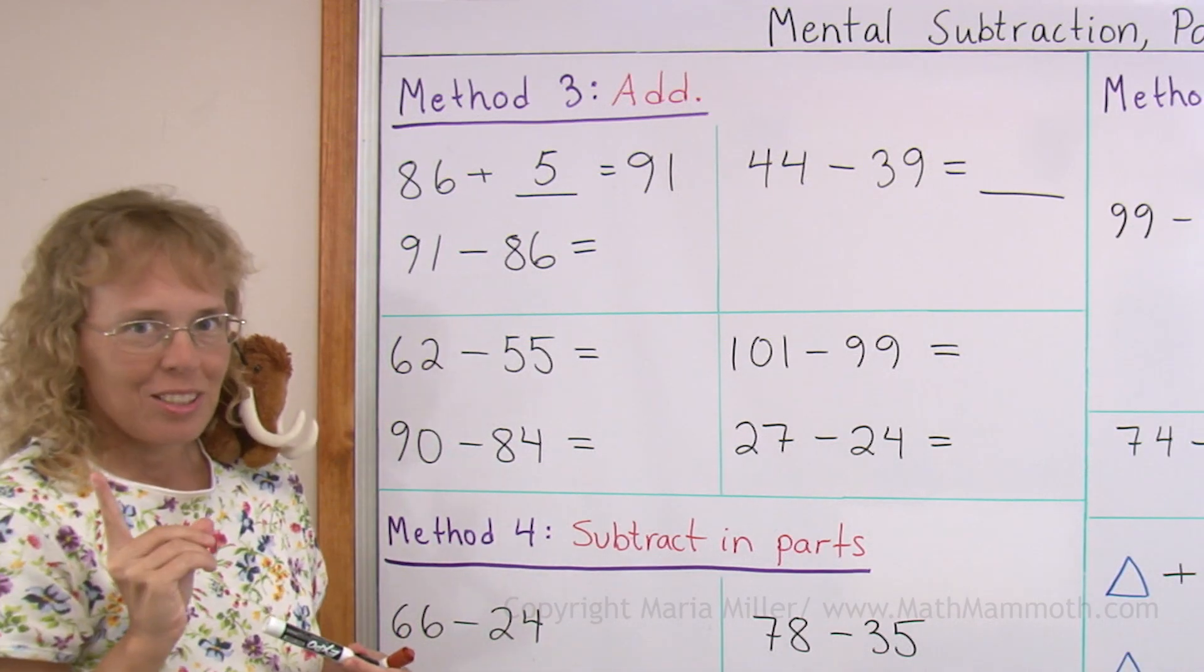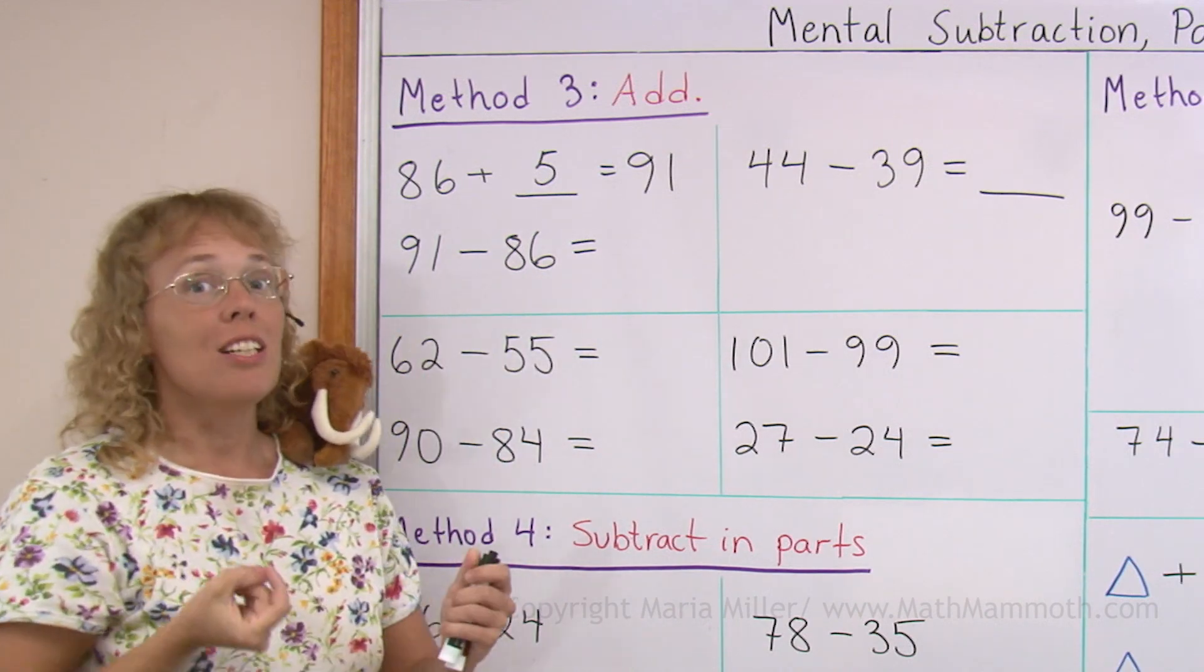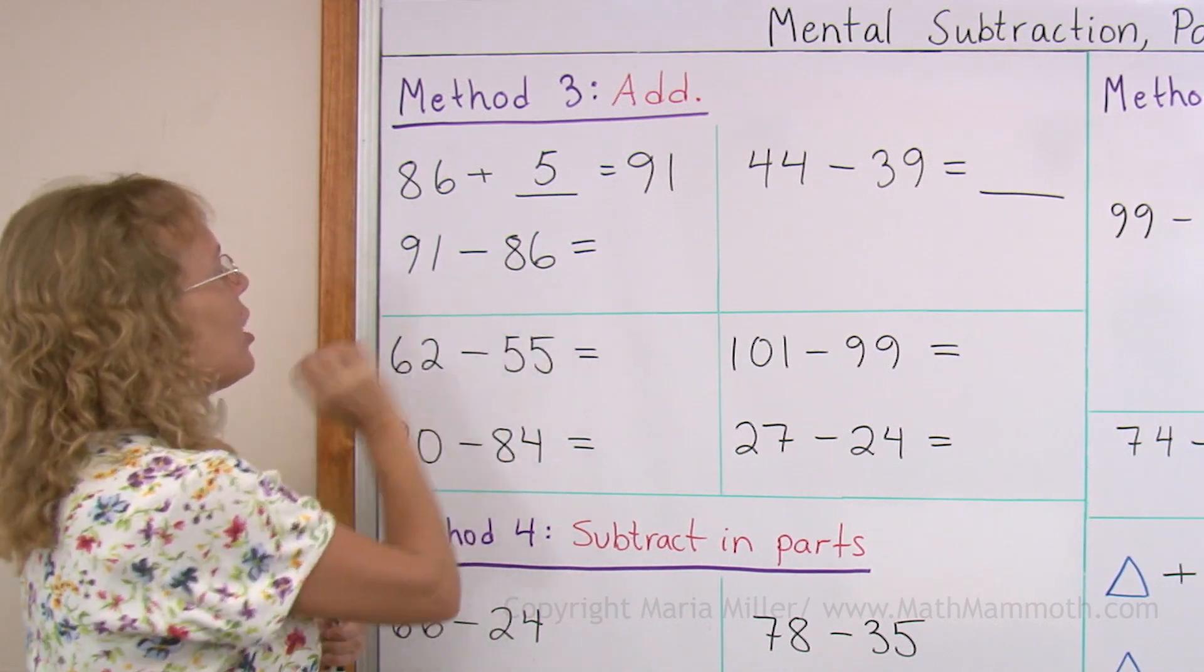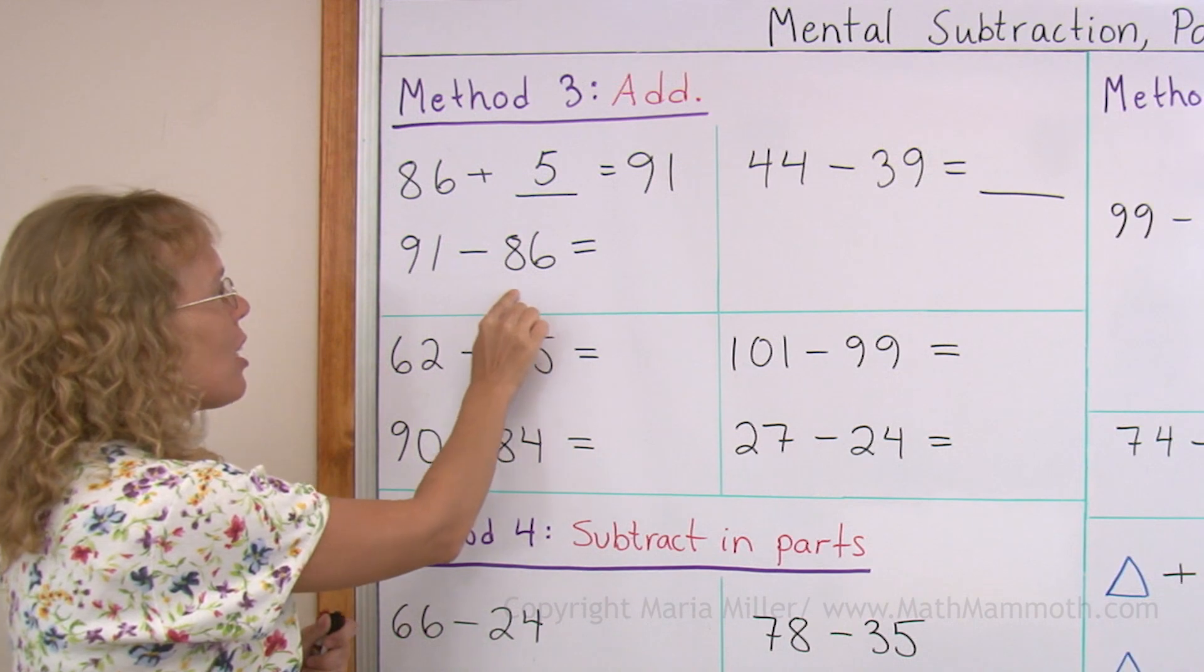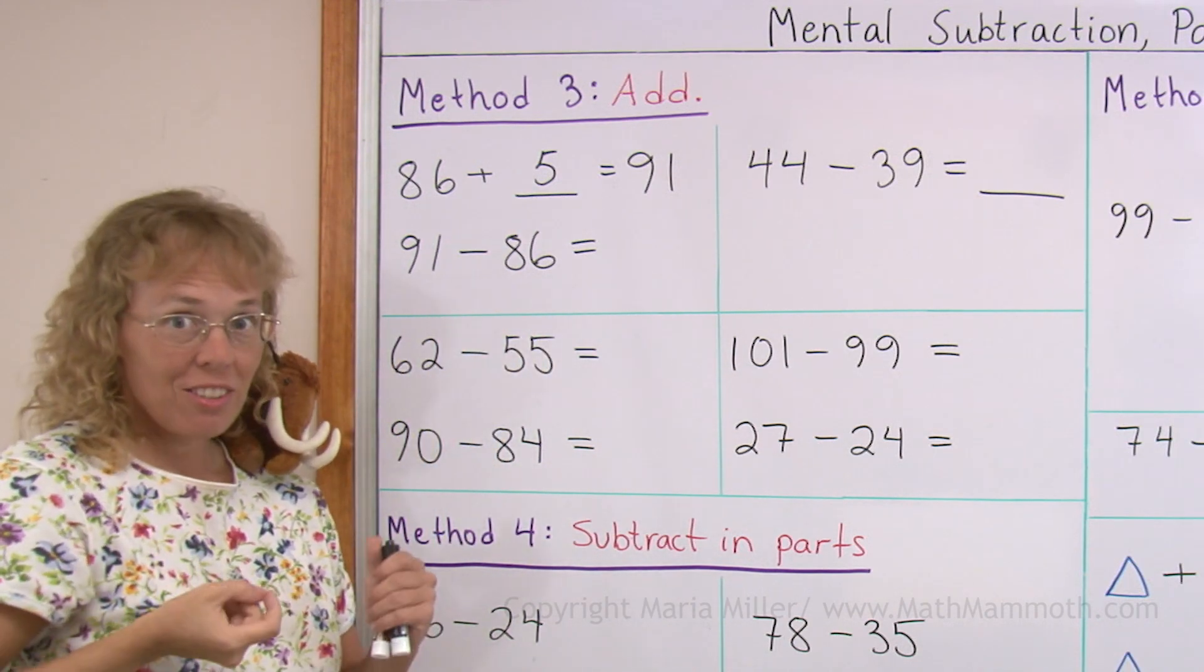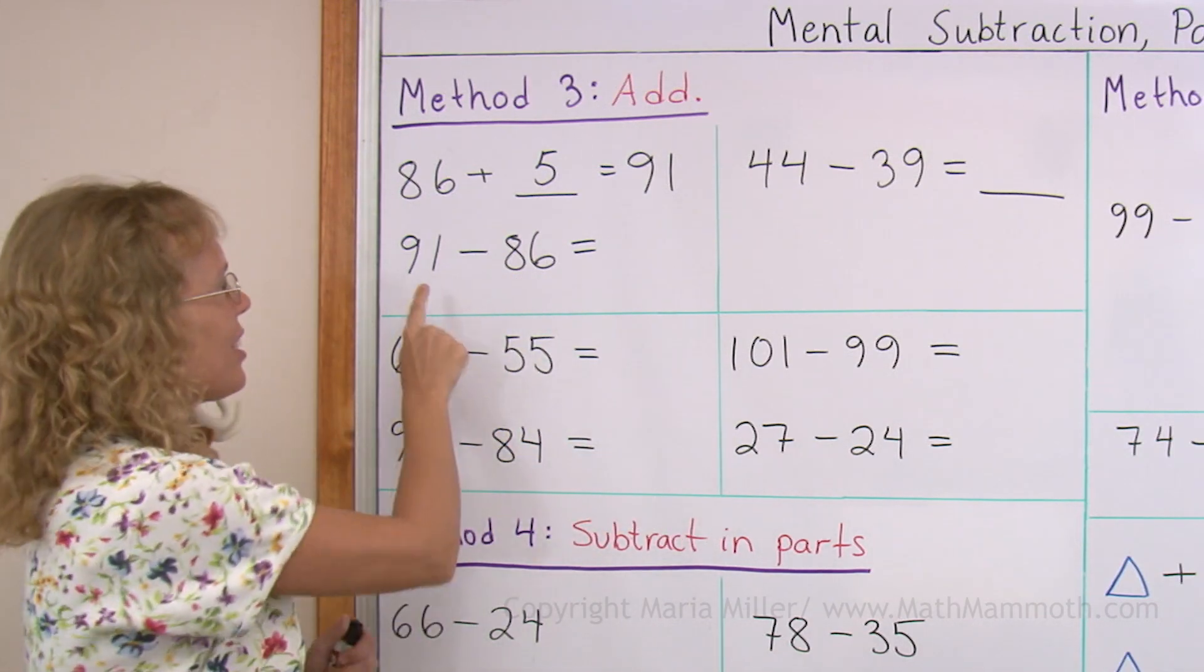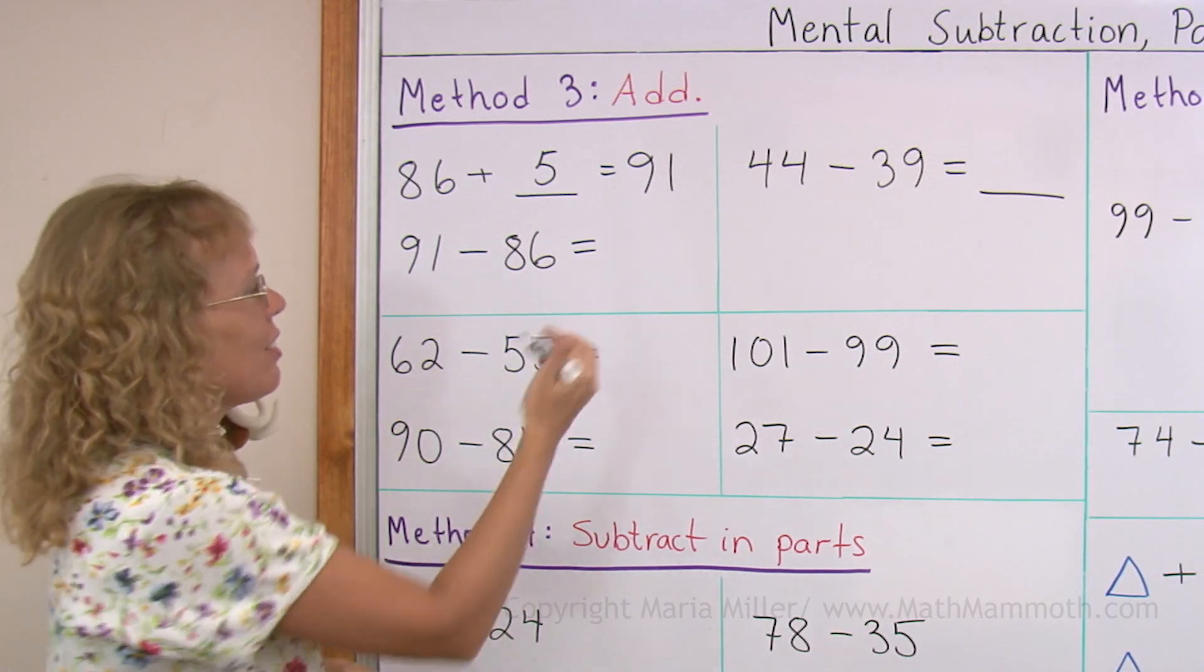I'm not going to write it quite yet. Because when you see just the subtraction problem, you can think of the difference of these two numbers. You can think 86 plus how many more makes 91 or you can think of a number line that you are at 86 and then how many jumps till you get to 91. So the answer is 5.